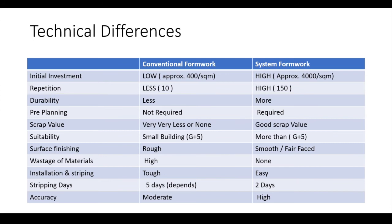Now I am talking about the technical differences. Many engineering students don't know what system formwork is, so this is a small glimpse for them. For initial investment: conventional is low — around 400 per square meter, even 150 per square meter has been heard. System formwork is approximately 4,000 per square meter. For climbing formwork it can go up to 30,000–40,000 per square meter. As complexity increases, the price per square meter increases.